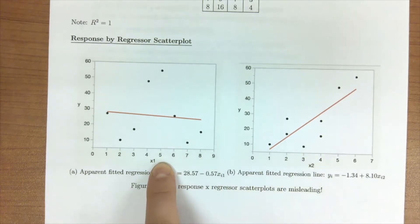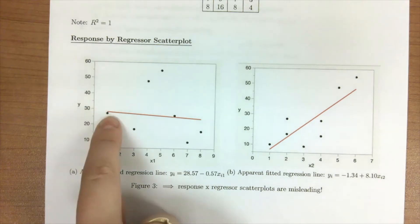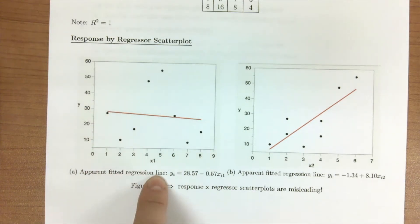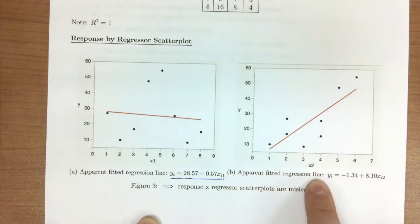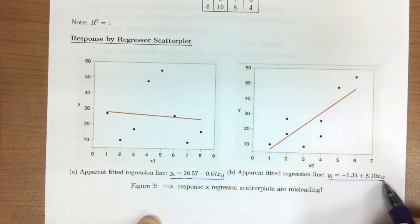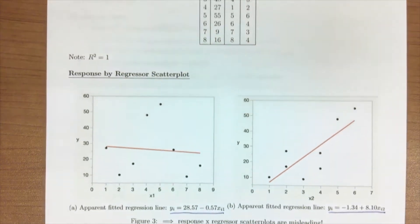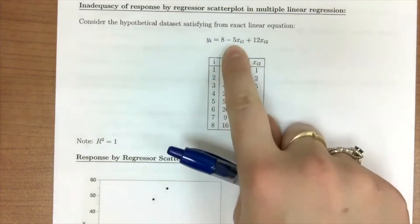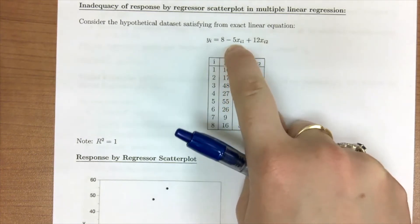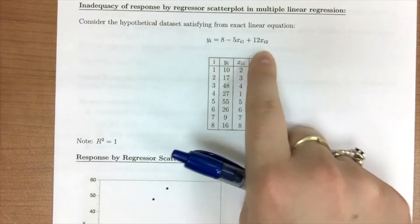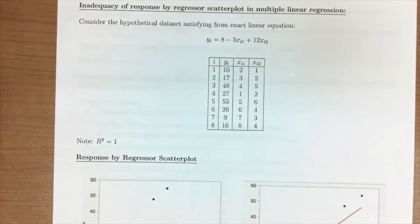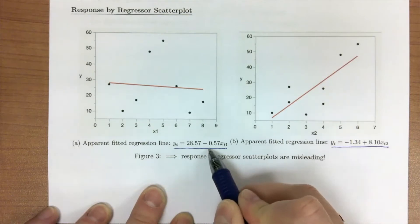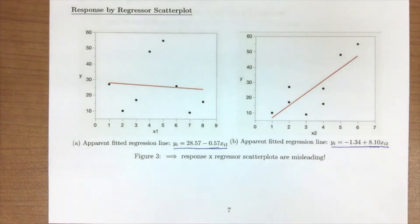When we plot x1 and our response, we get this fitted line, represented by this equation. If we do the same thing for x2 and y, our fitted regression — this red line — is here. But notice: looking at this equation, we'd expect the slope for x1 to be negative 5, or at least near negative 5, our slope for x2 to be 12, and our intercept to be roughly 8. Coming down here, we can see that our slopes and intercepts definitely don't match.